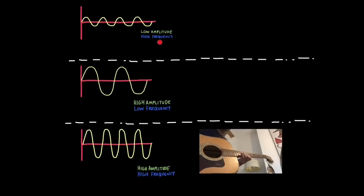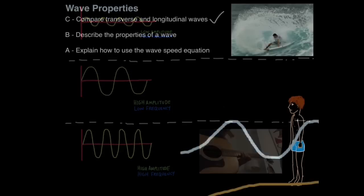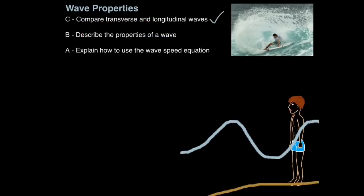Pitch is basically a way we interpret frequency in sound, and loudness is how we interpret amplitude in sound. Remember, in light, amplitude refers to the brightness, and frequency refers to the colour perceived. And that's how we describe the properties of a wave.